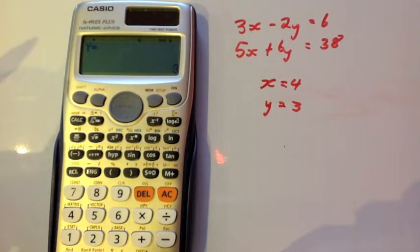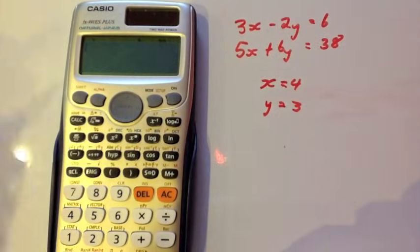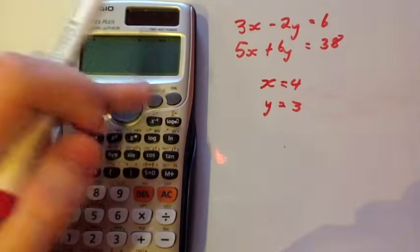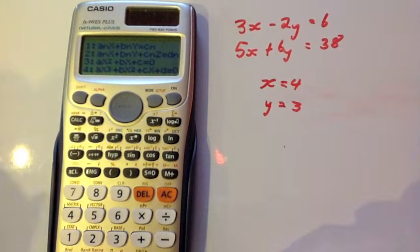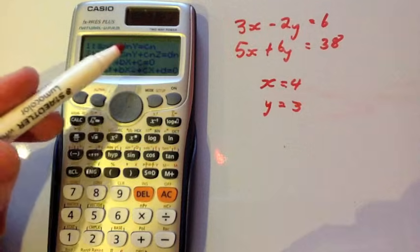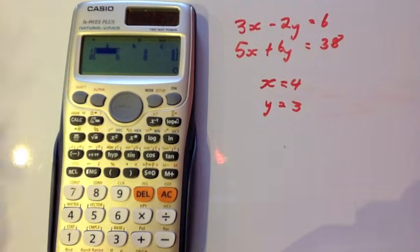Just to recap: if your calculator is just in the normal mode like that, press mode and number 5 is the equation mode, so press 5. You want the first option which is the XY equals a number, press number 1, and then it will prompt you for the values to put in and then solve it.